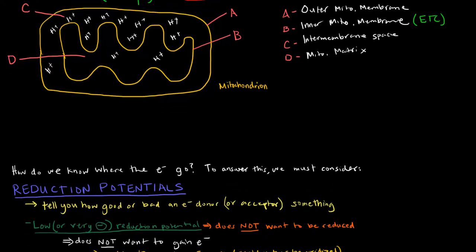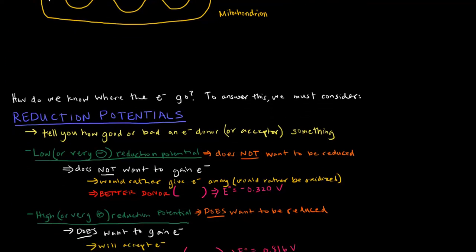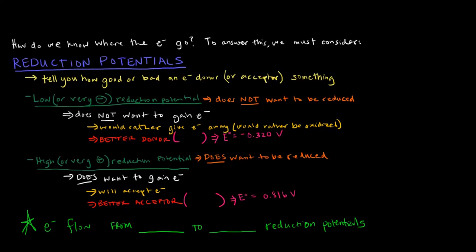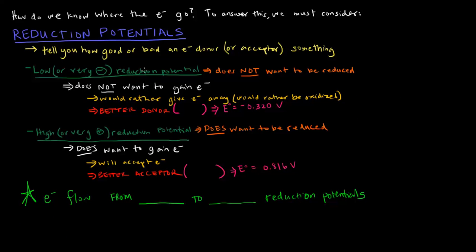What we need to understand about the electron transport chain is that because it's a series of redox reactions, we need to understand the idea of reduction potentials. The reason why is because we want to know where the electrons are going — if there's a bunch of redox reactions, that means there's loss of electrons and gain of electrons. Reduction potentials essentially tell you how good or bad an electron donor or acceptor something is.